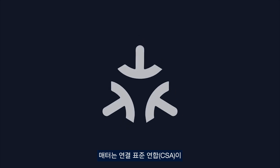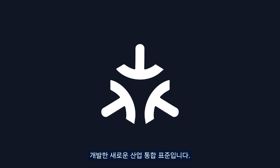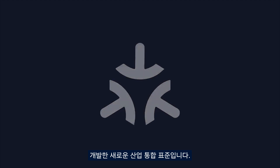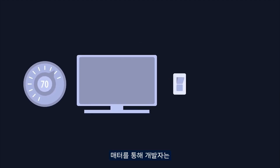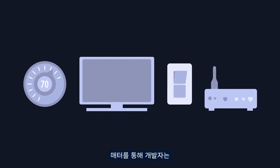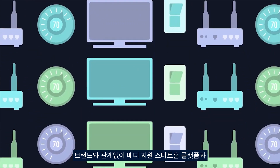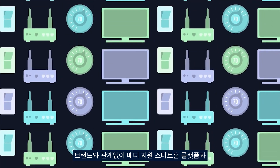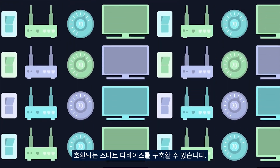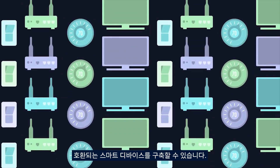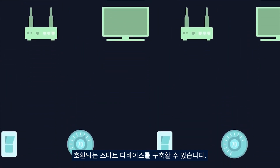Matter is a new industry unifying standard from the Connectivity Standards Alliance. Matter allows developers to create smart devices that work with each other, regardless of brand, and with Matter-enabled smart home platforms.